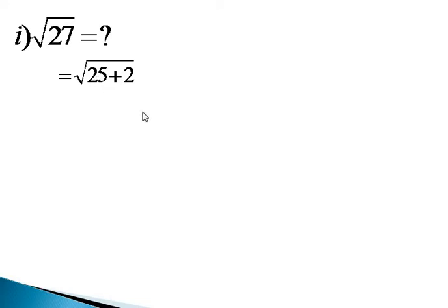So the next step is, the square root of 25 is 5, plus that 2 as it is. Then in the denominator we write that 5 as it is and multiply by 2. So 5 plus 2 by 10.